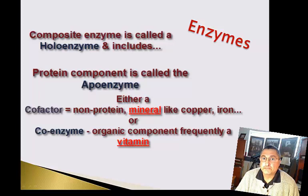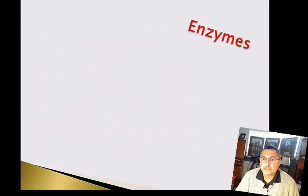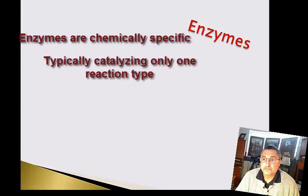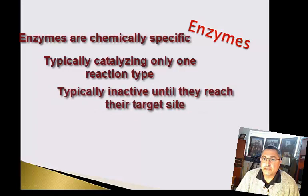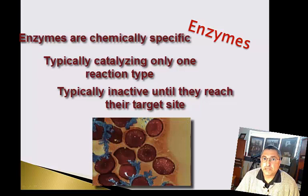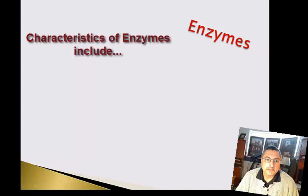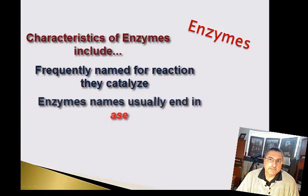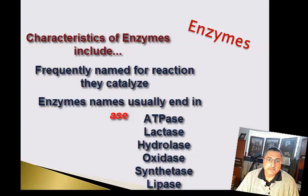So here you see why vitamins and minerals are important — they activate enzymes. Enzymes are chemically specific to only one reaction and are typically inactive until they are needed, being activated at a specific site. Examples include digestive enzymes and clotting enzymes, which float in the blood in their inactive state until triggered by damage to a blood vessel. Enzymes are frequently named after the reaction they catalyze, and all enzymes end in the suffix -ase — examples being ATPase, lactase, hydrolase, oxidase, synthase, and lipase.